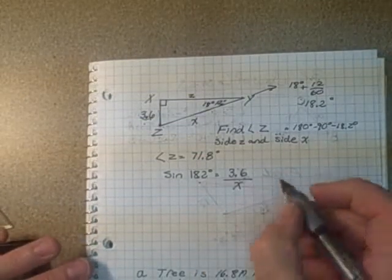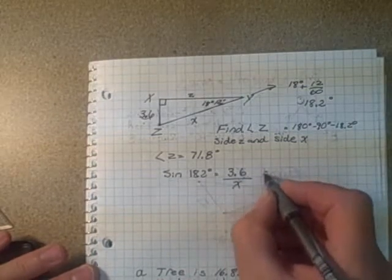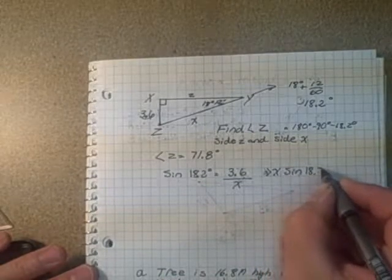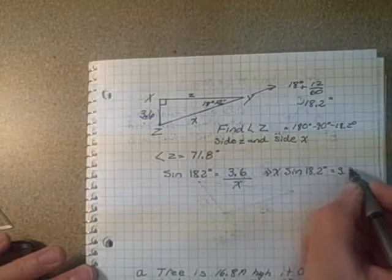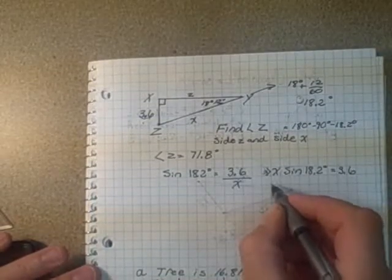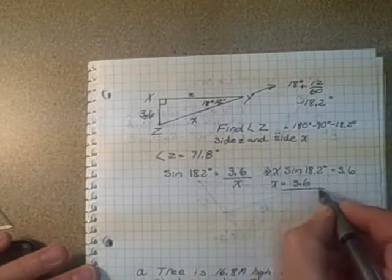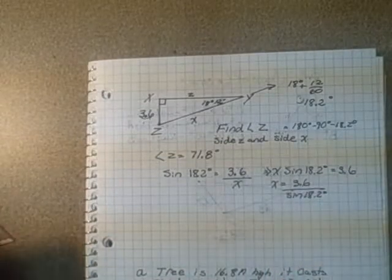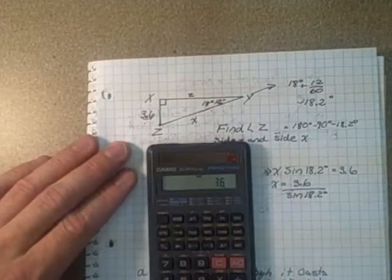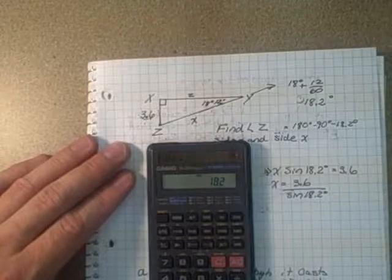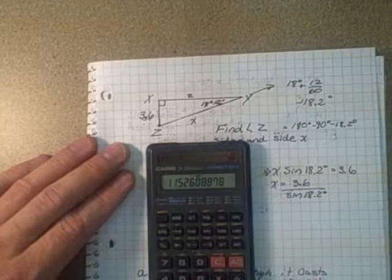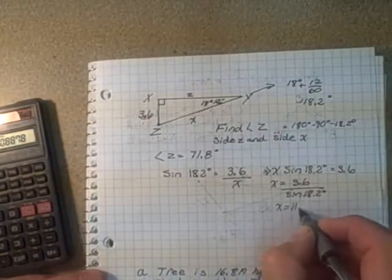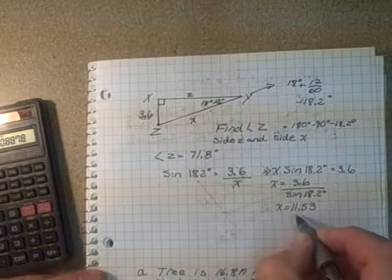So I want to solve for X. So if I bring the X over here, I can get X times the sine of 18.2 degrees equals 3.6. Then I have to divide by the sine of 18.2 degrees. So X is equal to 3.6 divided by the sine of 18.2 degrees. So now I'll take my calculator and plug that in. So 3.6 divided by 18.2 sine equals 11.53 to two decimal places.